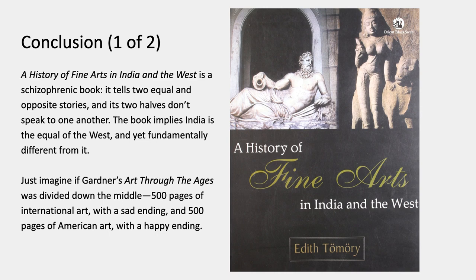You might imagine if Gardner's Art Through the Ages were divided down the middle — say 500 pages for international art with a sad ending and then 500 pages for American art with a happy ending. That's what this is like. It's a really interesting test case, because when people publish introductory texts of world art in different countries, they always have to come to terms with this problem: how much space do you give to the art of your own country or region? This book has a very clear, simple solution, even though it's not defended in the text.